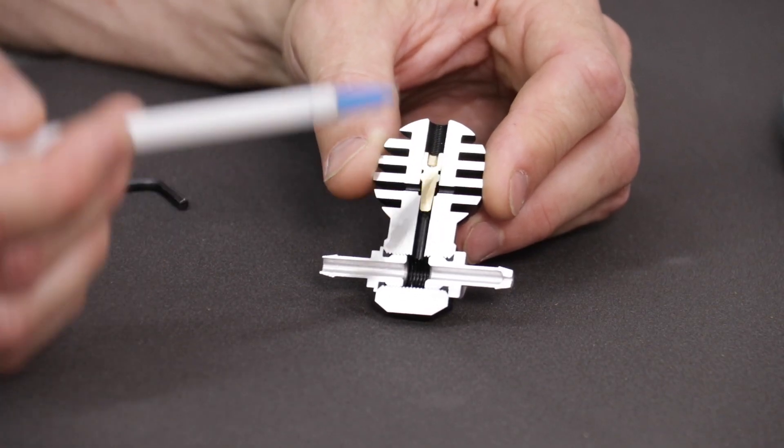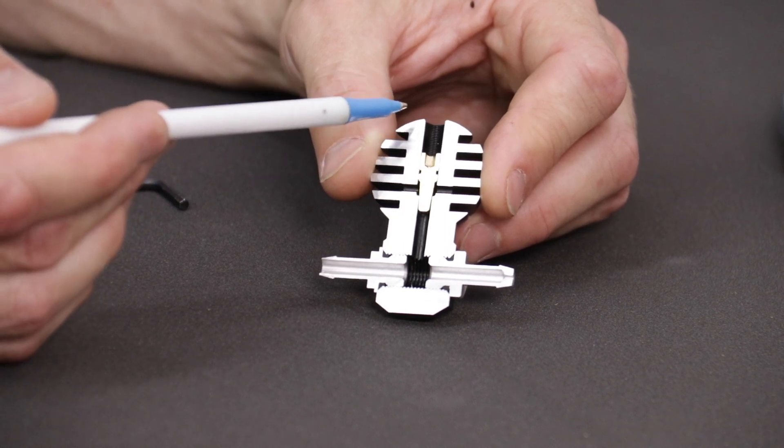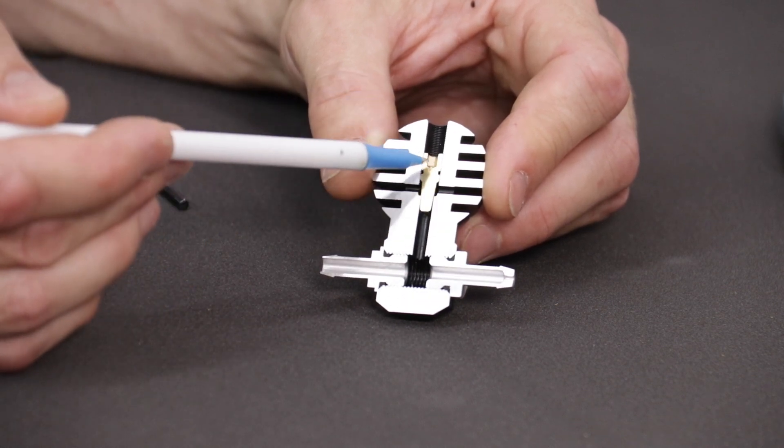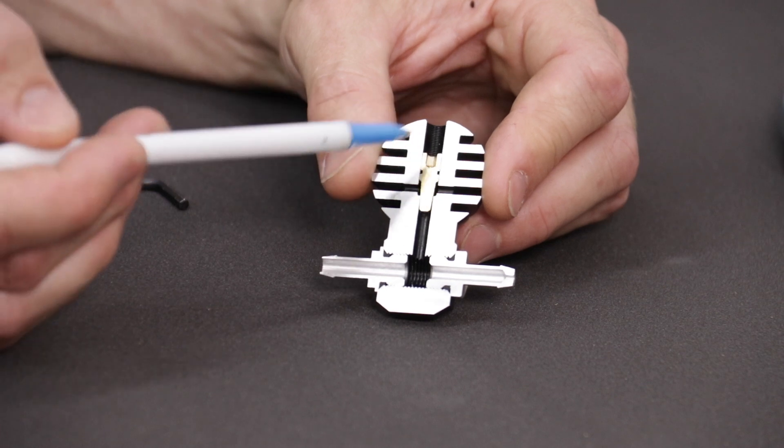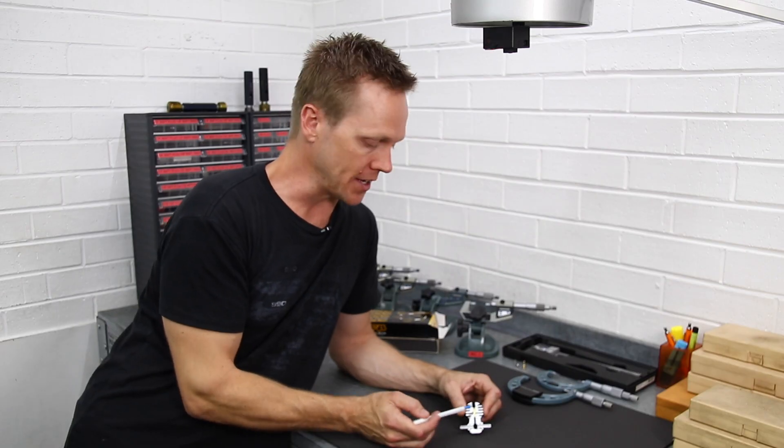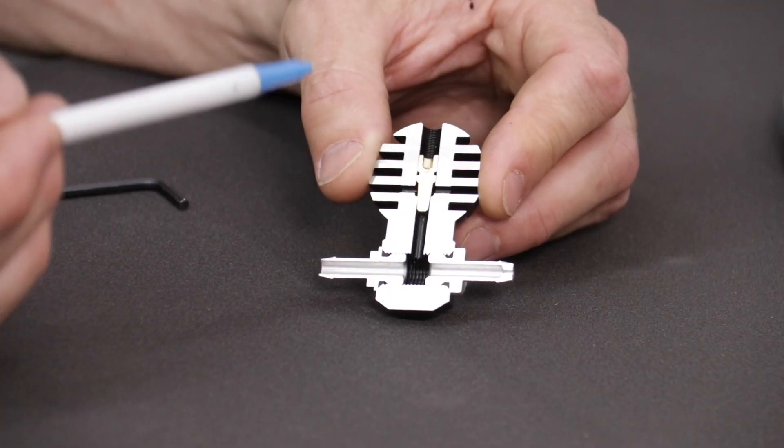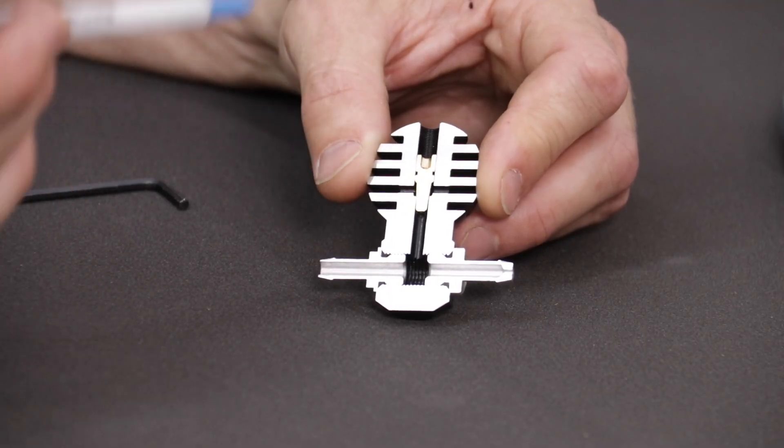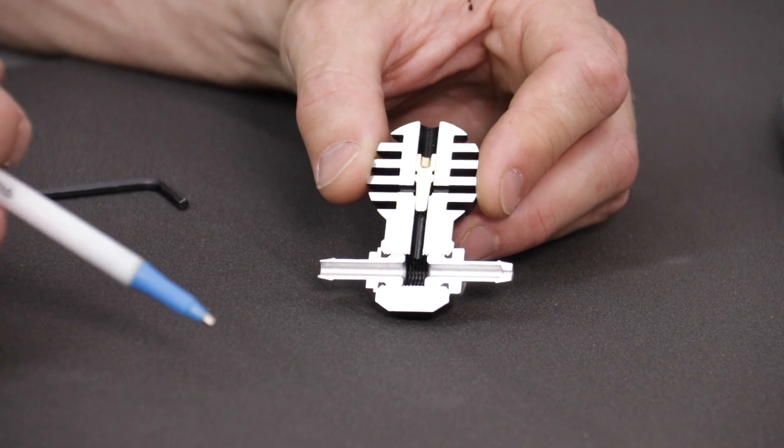The diameter of the restrictor hole also changes the sensitivity of the adjustment screw. The larger that hole, the less sensitive this screw is because you need to bleed more air to compensate for how much is coming in. If you go too small, it can actually make the adjustment screw too sensitive which can lead to boost instability and generally unreliable boost pressure control.